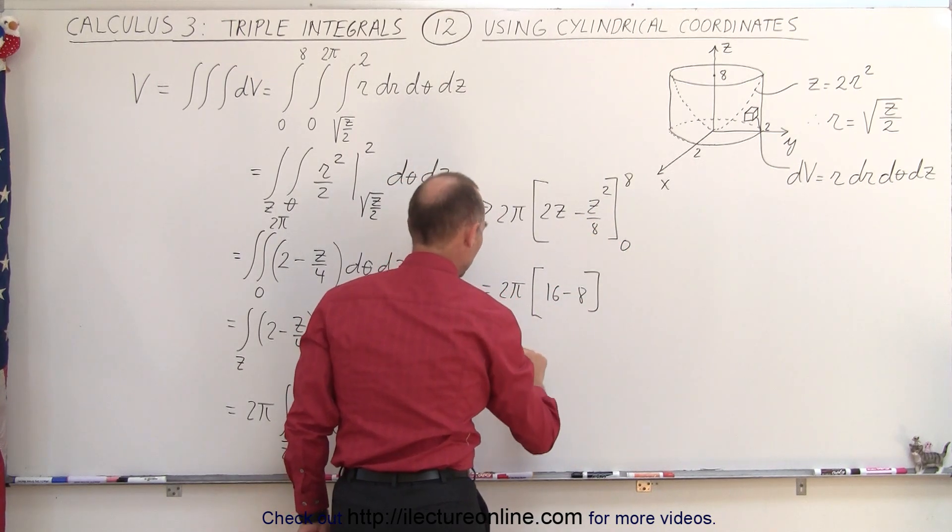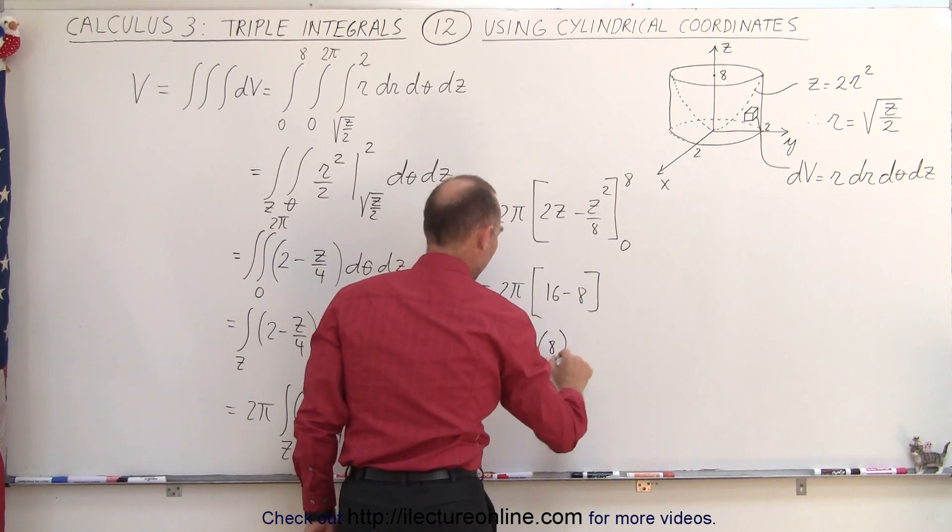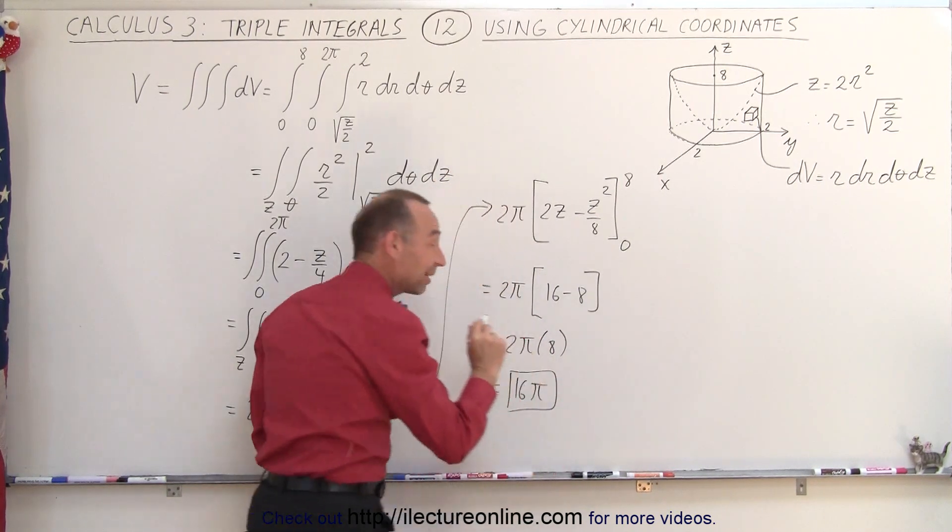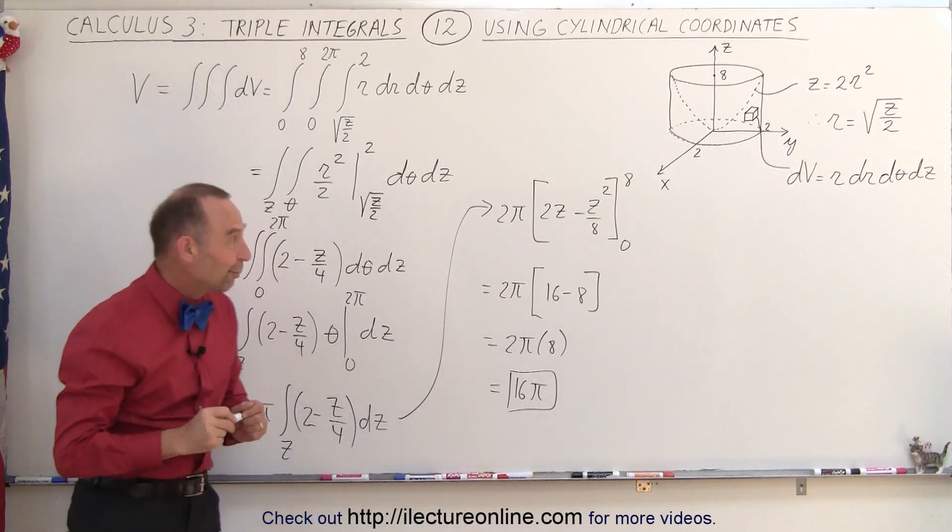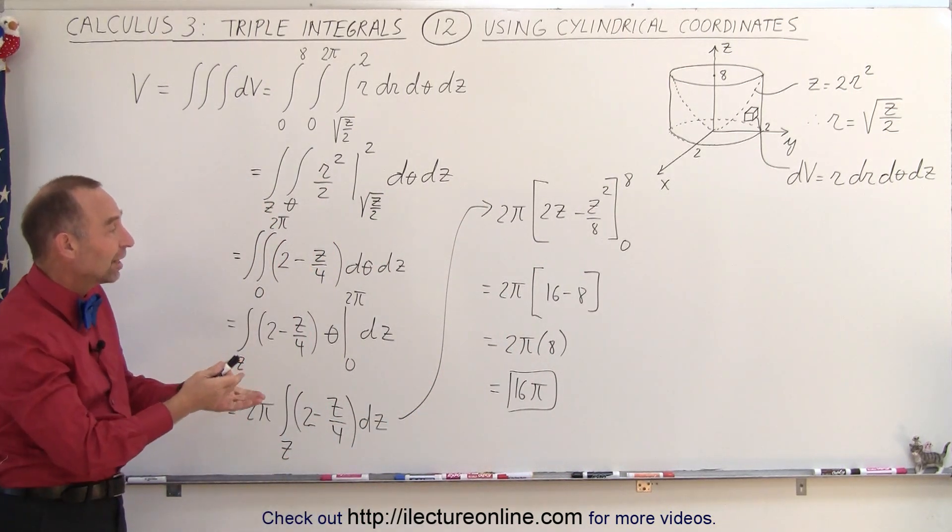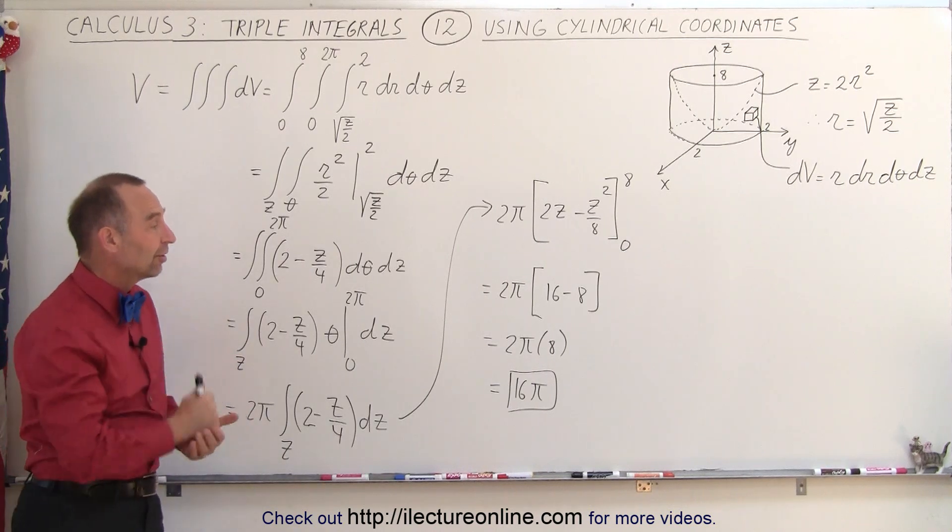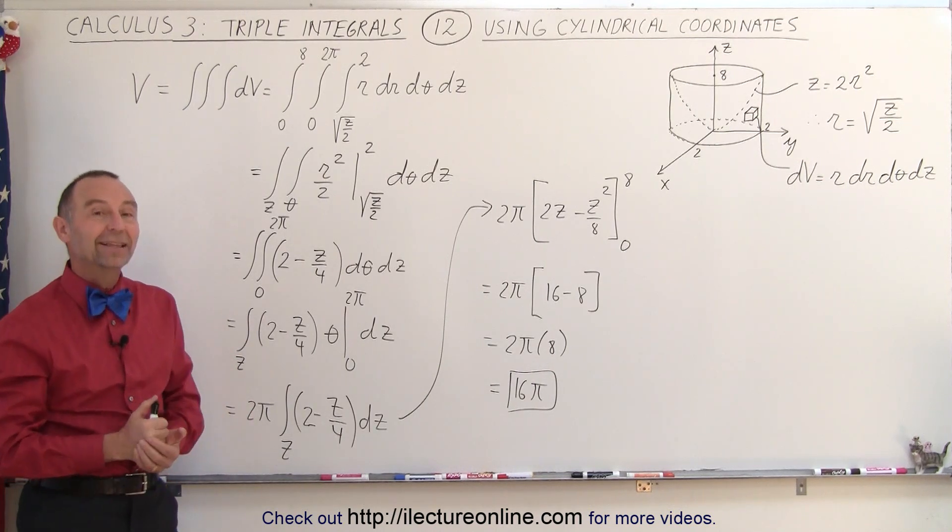And so, this becomes 2 pi times 8, or 16 pi, which is, of course, the exact same volume that we found in the previous videos. But here, you can see that you can do this just as well, and probably preferred, using cylindrical coordinates. And that's how it's done.